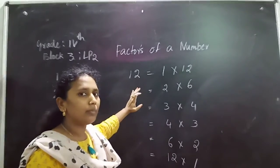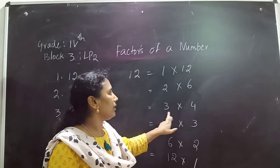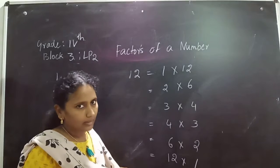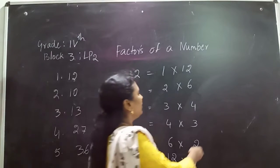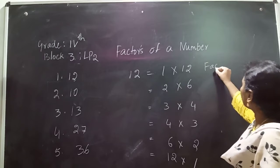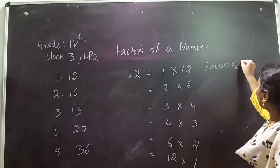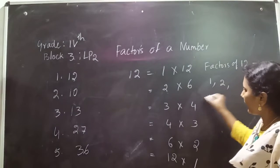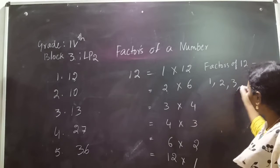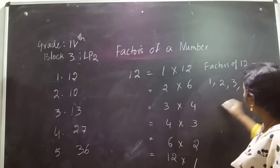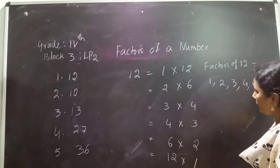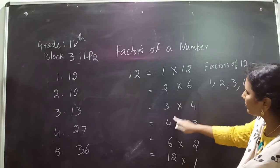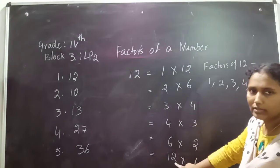These are the factors. What are the factors? 1 times 12, 2 times 6, 3 times 4, 4 times 3, 6 times 2, 12 times 1. But these are the factors. Now, 2 is repeated, so don't write it again. 3 is repeated, 4 is repeated, 6 is repeated, and 12 is repeated.